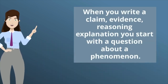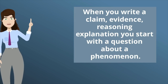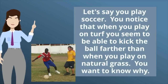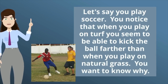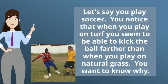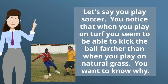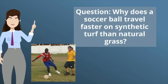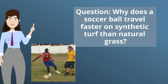When you write a claim, evidence, reasoning explanation, you start with a question about a phenomenon. Let's say that you play soccer. You notice that when you play on turf, you seem to be able to kick the ball farther than when you play on natural grass. You want to know why. The question is: why does a soccer ball travel faster on synthetic turf than natural grass?